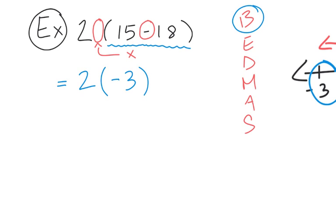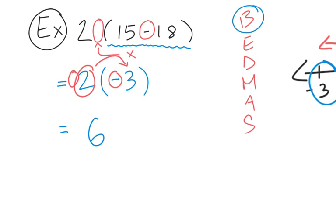Zooming back in, we now have 2(−3). When you have a number in front of brackets, you use the distributive property — this 2 is distributed to everything within the brackets. So we get 2 times negative 3. Two times 3 is 6, and since a positive multiplied by a negative gives a negative, our final answer is negative 6.